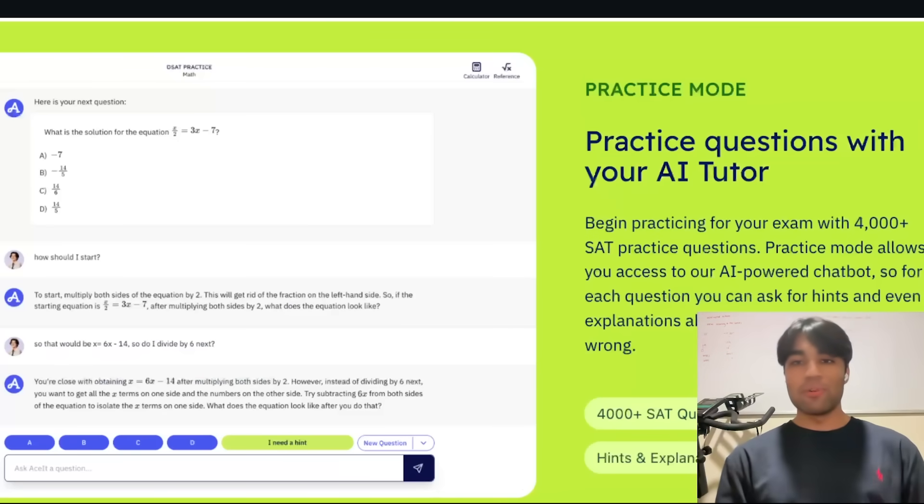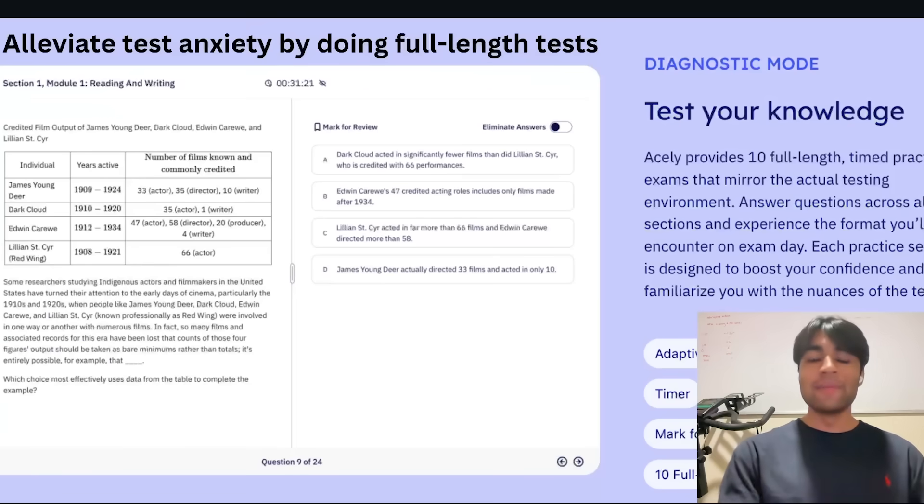This lets you crush both module one and module two. I know the SAT has changed to the digital SAT and Aceley is on top of that. In addition to this they have multiple different modes. As you can see over here you have the practice mode. You can practice questions with your AI tutor. Kind of like ChatGPT but embedded in this and like gives you the actual questions for this. So it's just step by step. You can just keep going through these and really grind them out. In addition to that there's also the diagnostic mode. This I think is really helpful because I know a lot of students get really anxious about the SAT.